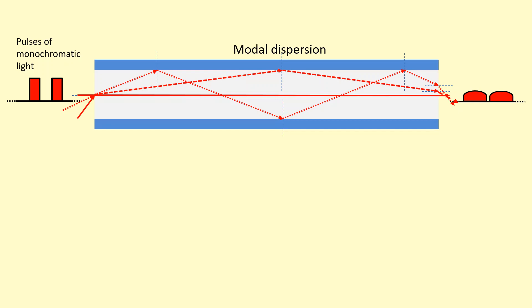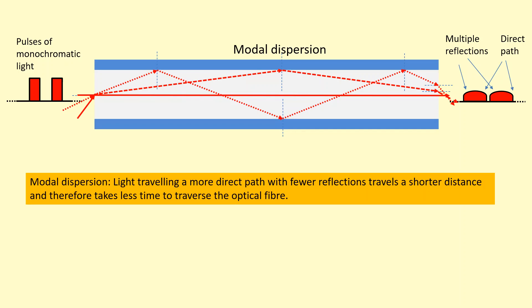So that's why at the other end we've got pulse broadening with the direct path arriving, rays that travel the direct path arriving first, and the rays that had multiple reflections arriving last. So this is called modal dispersion. And this is caused by the fact that the direct path travels a shorter distance, so it takes less time to traverse the whole optical fiber.